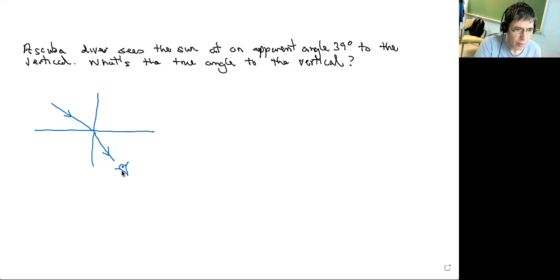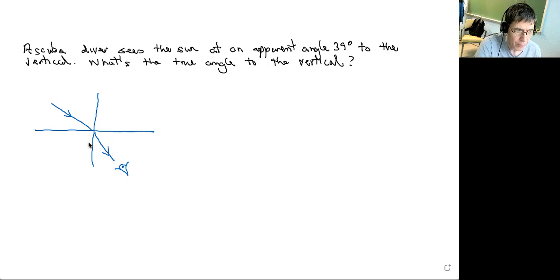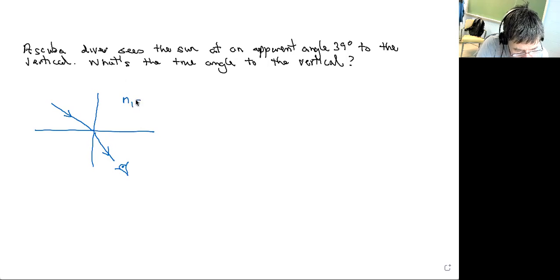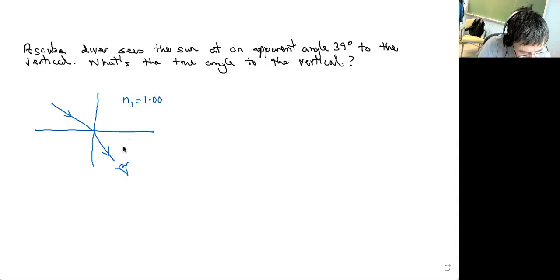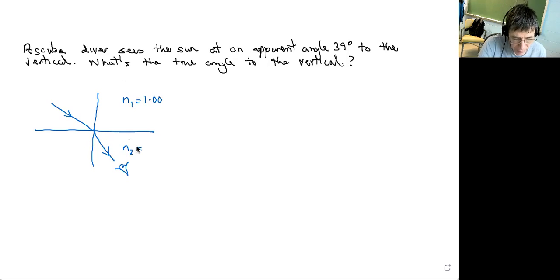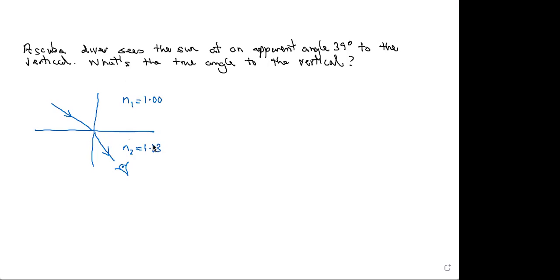I drew the refraction towards the normal because in this case we're going from lower refractive index — that's the refractive index of the air, I'll call that N1, and that's essentially 1 — to higher refractive index. I'll call it N2, the refractive index of water, and that's 1.33. So this light ray is traveling from air to water, from lower to higher refractive index, and this light ray is bent towards the normal.